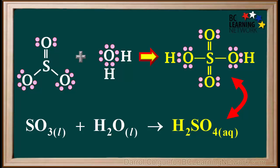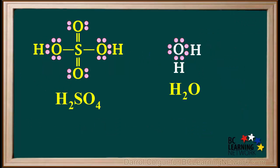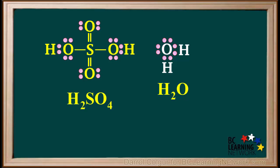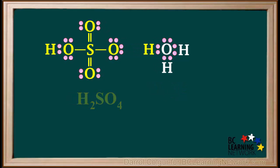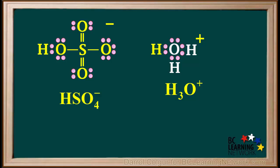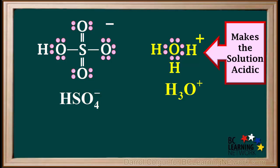If you check, you will see that sulfur, oxygen, and hydrogen atoms are all conserved in this reaction. When H2SO4 is in water, a molecule of H2SO4 will collide with a water molecule and donate a proton to it, forming a hydrogen sulfate ion and a hydronium ion. Because hydronium ions are present, the solution will be acidic.